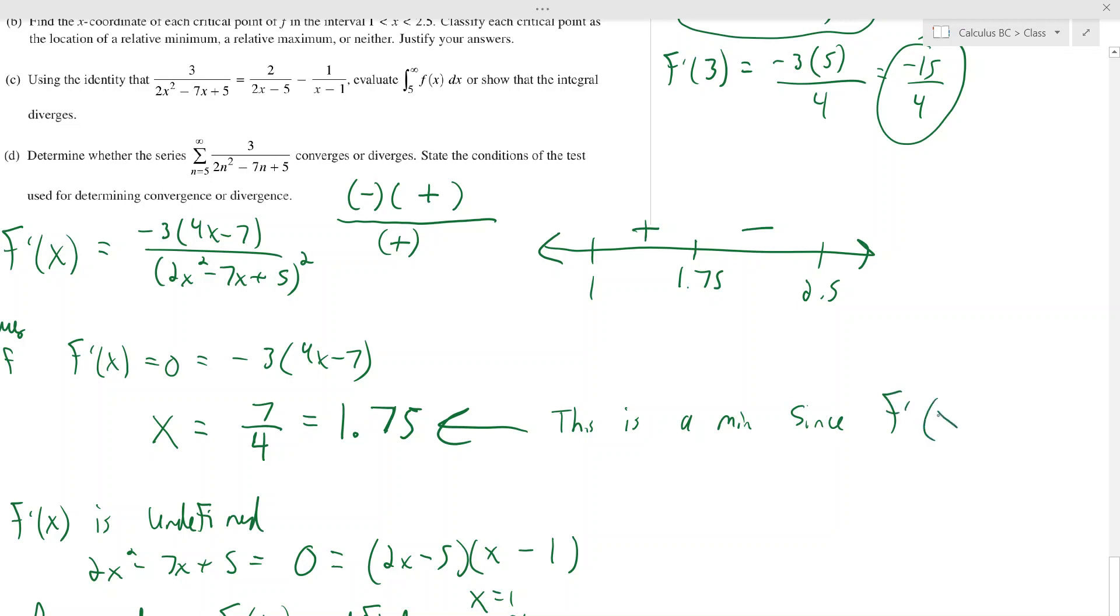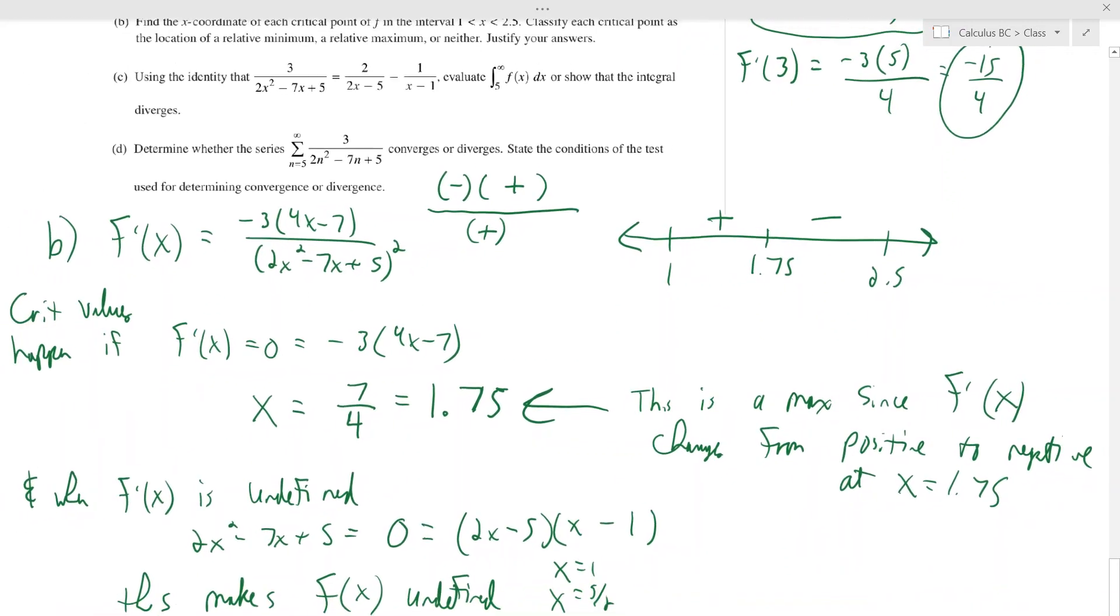So you're going to write this is a max. Since, don't say look at the number line, you got to write this out. Since f prime of x changes from positive to negative at 1.75. So hopefully that's not that hard either.